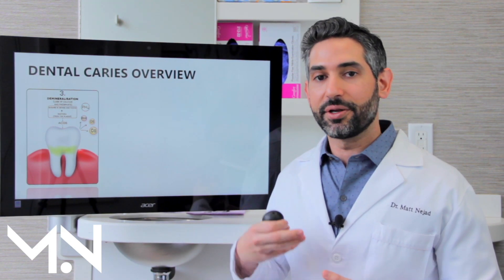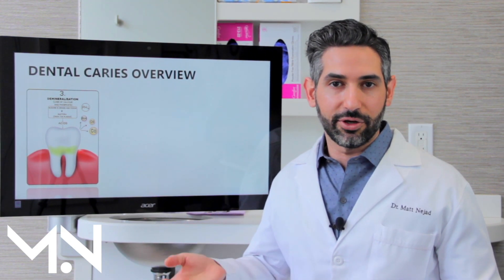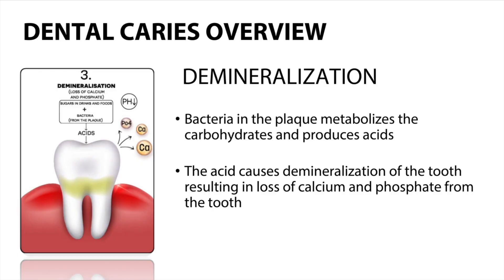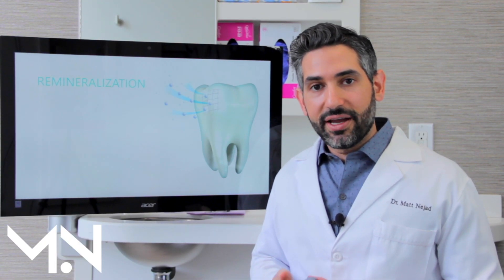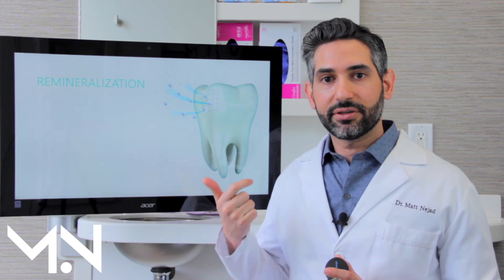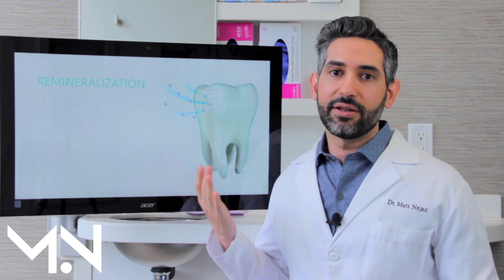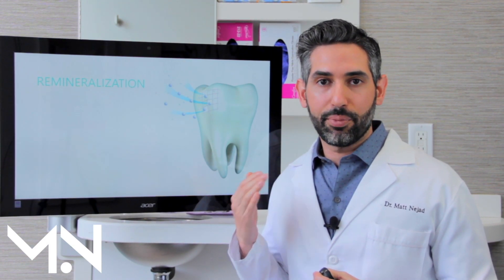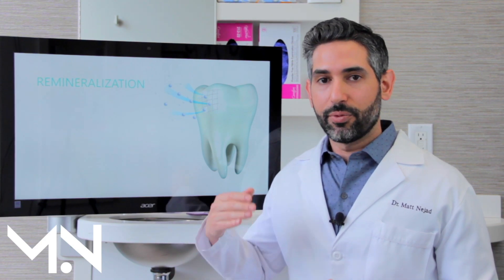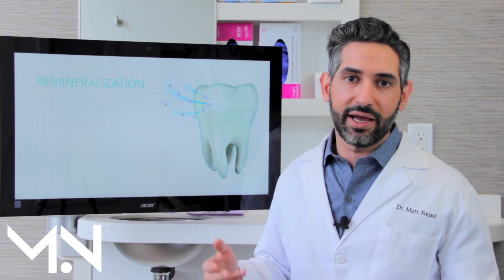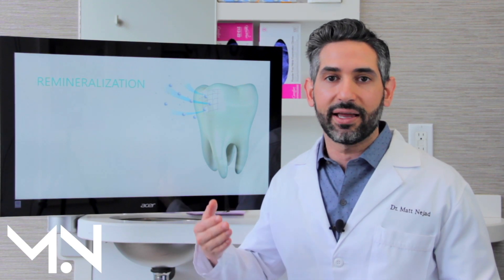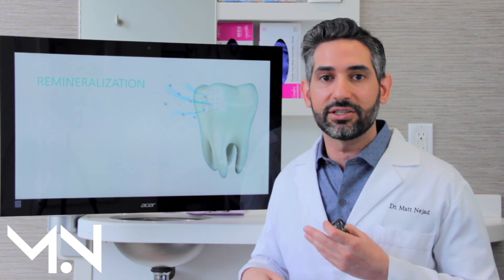The bacteria eats the carbohydrate, produces acid, and that acid dissolves the tooth little by little — that's demineralization, and it can lead to a cavity. Fortunately, our saliva has the ability to remineralize: you have calcium and phosphate in your saliva, and its pH is perfect for neutralizing that acid. But over time, if you have a lot of demineralization and you're not cleaning your teeth, eventually it leads to a cavity.